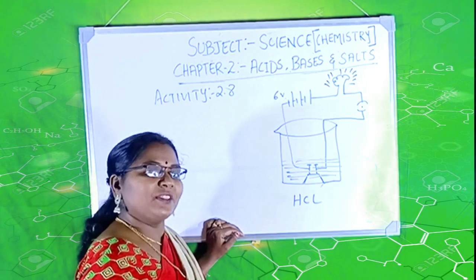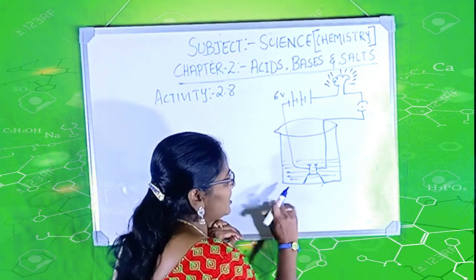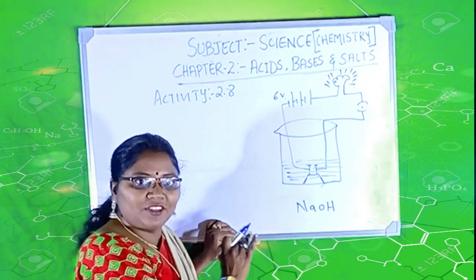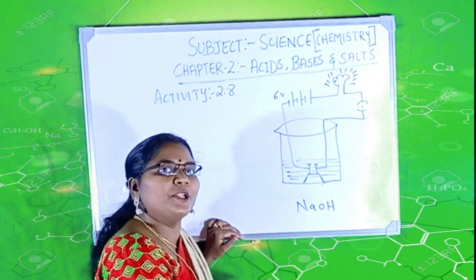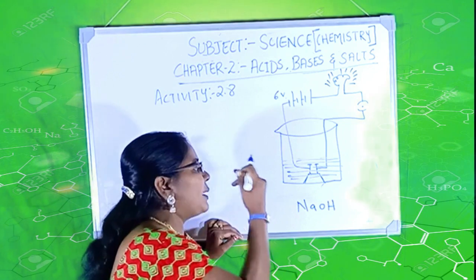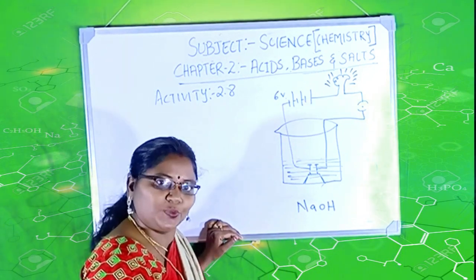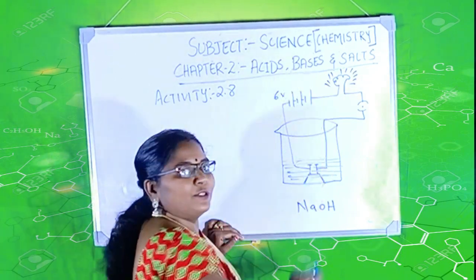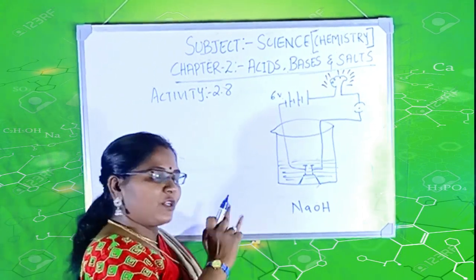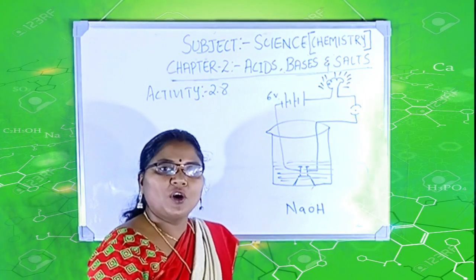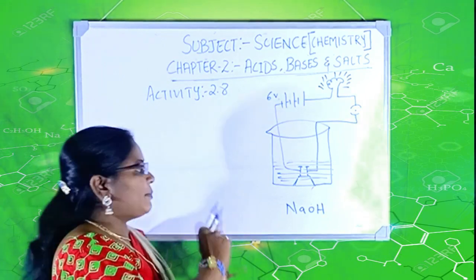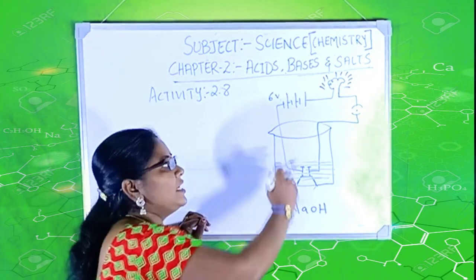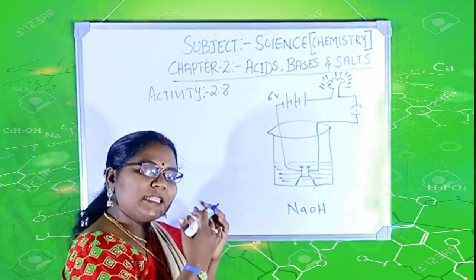Next, let me try with another solution. That is, sodium hydroxide solution. It is not there in your activity, but I am giving what is common in both the acid and the bases. So, I am taking sodium hydroxide solution too. So, once sodium hydroxide solution is filled, again, the bulb glows. How is that? When glucose is added, the bulb never glows. When alcohol is added, the bulb never glows. But when we had the solution of hydrochloric acid and sodium hydroxide, the bulb glows. What is happening over here?